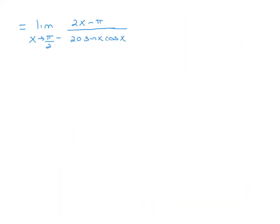We're getting there, but plugging in pi over 2 yet again gives 0 in the numerator and 0 in the denominator — because cosine of pi over 2 is 0, making the entire denominator 0. So we have another 0 over 0, and we must apply L'Hôpital's rule a third time.